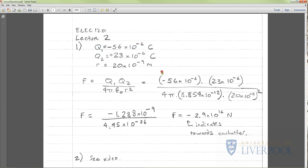It's good practice to actually write down the values you're working with. I've defined q1, q2, and r, which is the distance. q1 is minus 56 microcoulombs because it's a negative charge, and q2 is positive 23 microcoulombs. Remember, micro is times 10 to the minus 6, and the distance is 20 nanometers, so it's 20 times 10 to the minus 9.